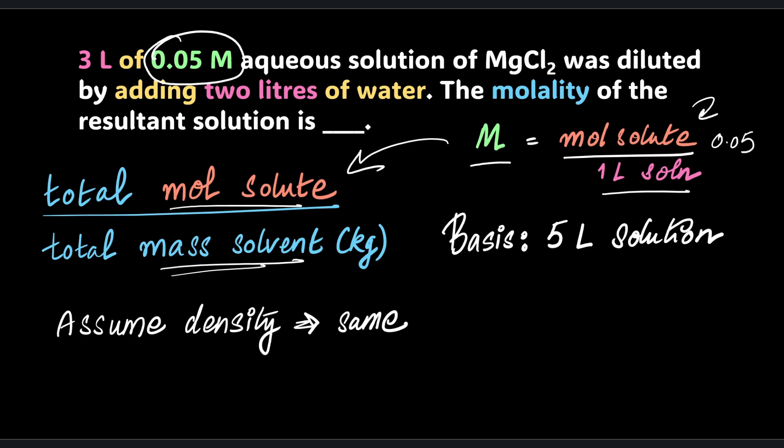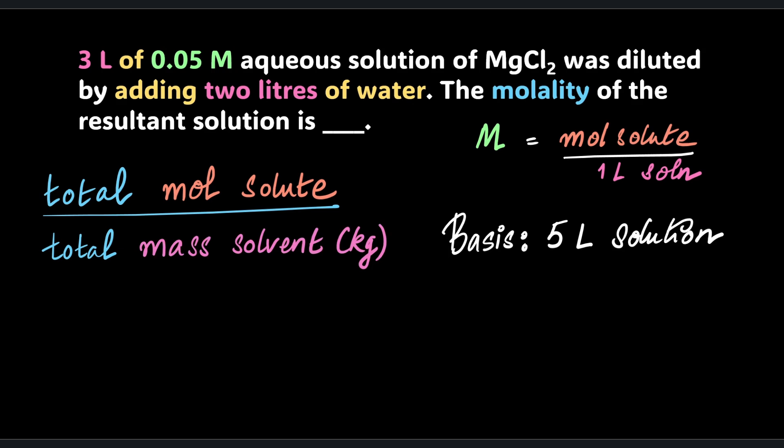Before we continue with the moles, let's figure out this denominator as well. I'm going to assume, because the question doesn't say anything else, that the density doesn't change too much and the density of water is still close to 1 kilogram per liter. I know this is a huge assumption, but since the question doesn't say anything else, let's go with that. The mass of solvent in kilograms is going to be the same as the volume, so this is going to be 5 kilograms itself.